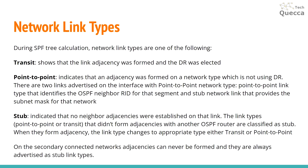Let's review network link types. During SPF calculation, network link types are one of the following. Transit indicates that link adjacency was formed and the designated router was elected. Point-to-point indicates that an adjacency was formed on a network type that is not using a designated router. There are two links advertised on the interface with point-to-point network type: first, the point-to-point link type that identifies the OSPF neighbor router ID for that segment, and second, the stub network link that provides the subnet mask for that network.